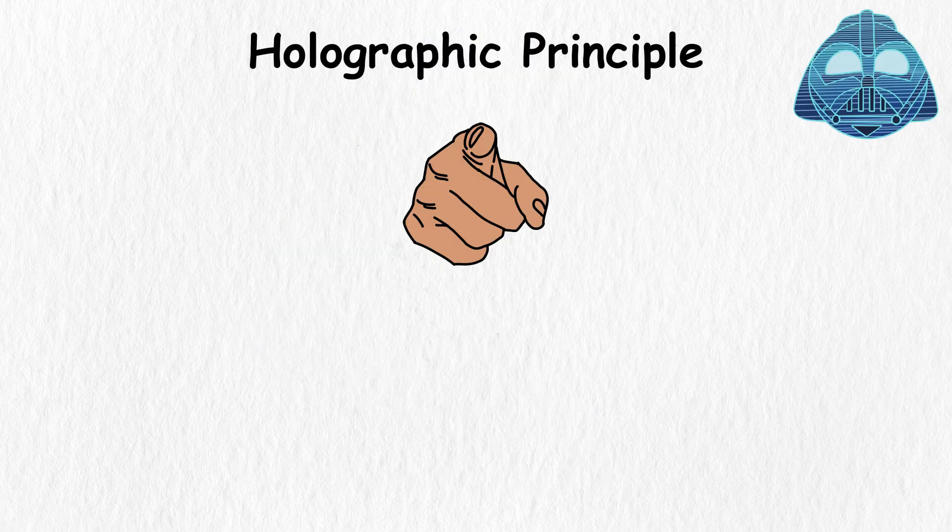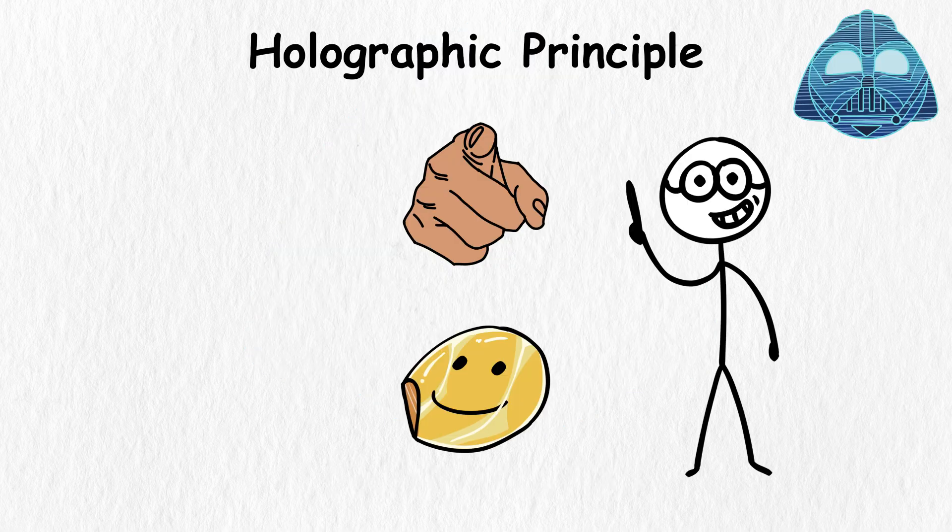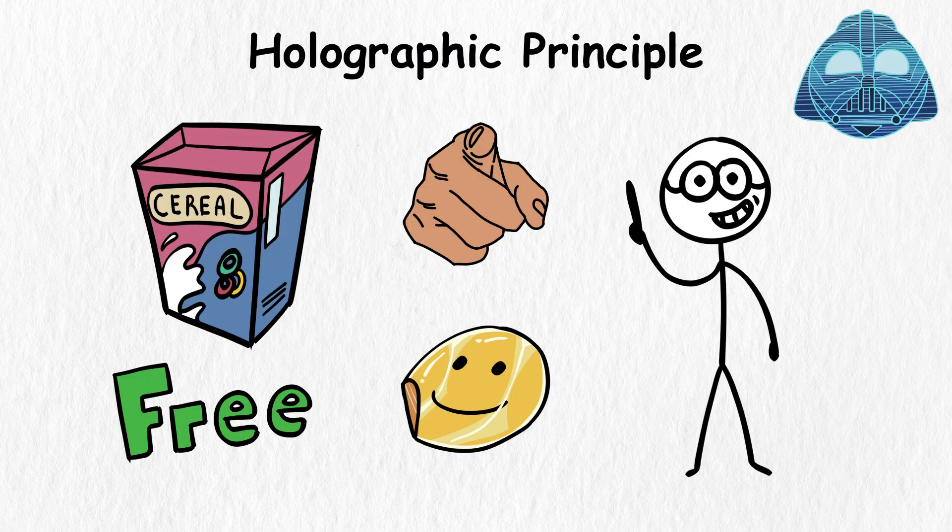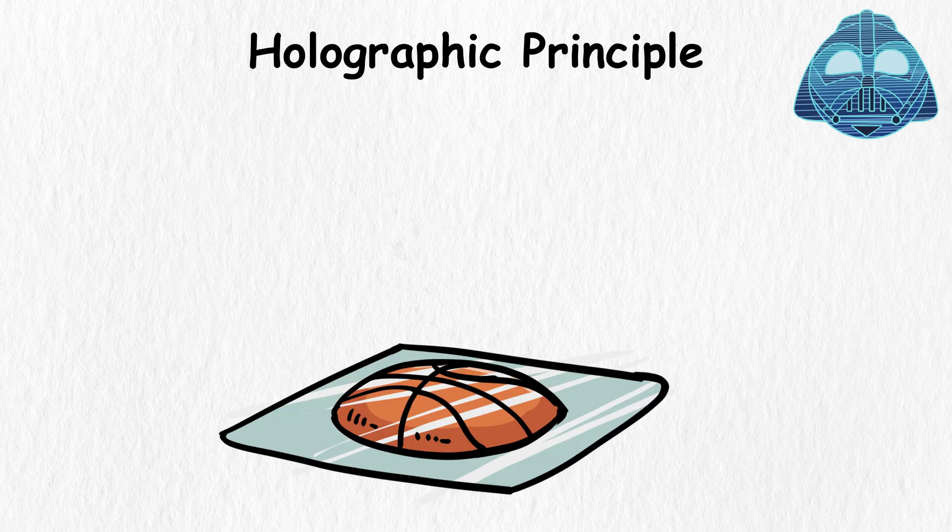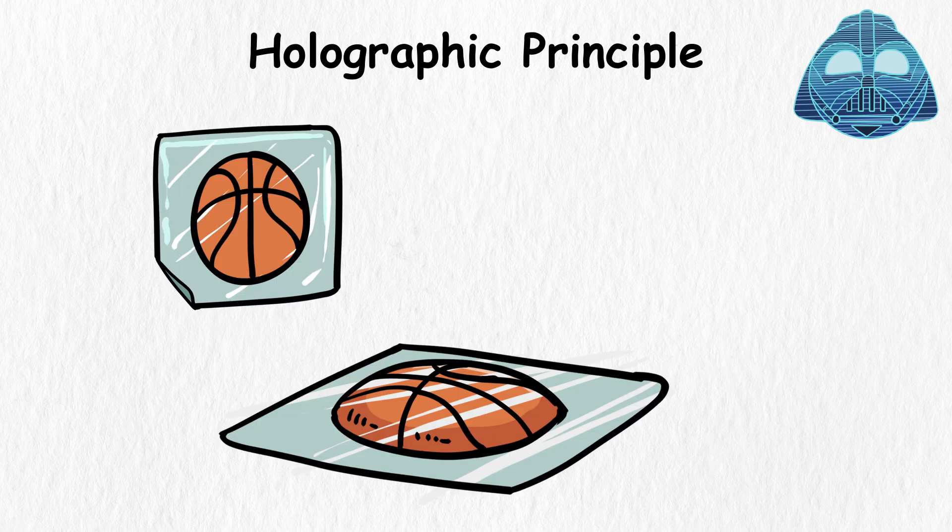Holographic Principle. You probably remember the hologram stickers you got for free in a cereal box when you were a kid. These stickers project 3D images. But in reality, it's just a two-dimensional surface designed to look like it's three-dimensional.